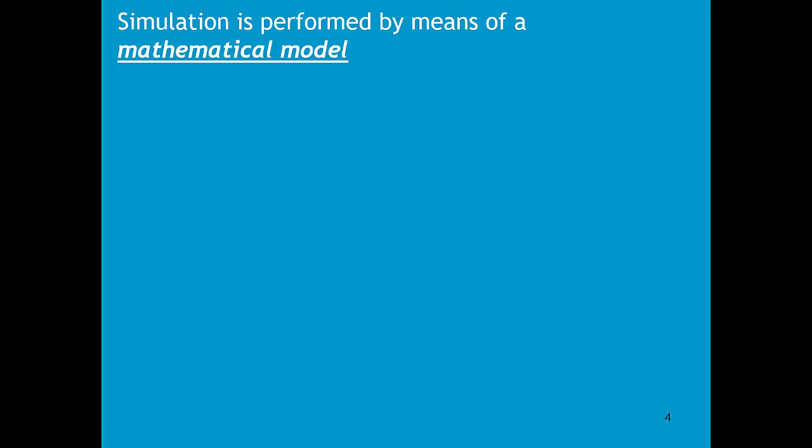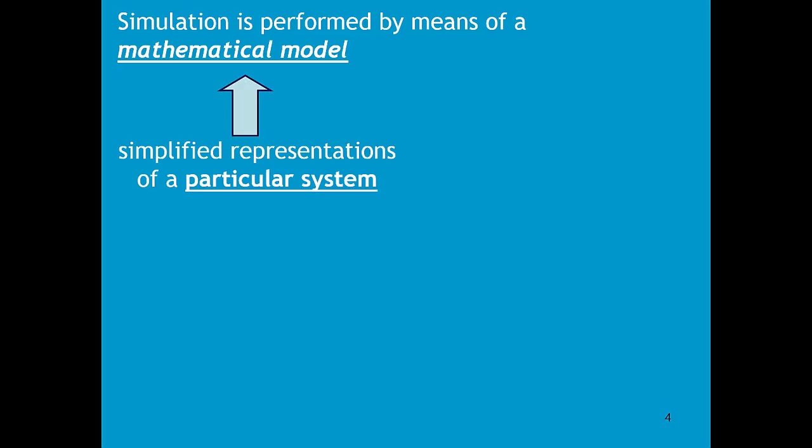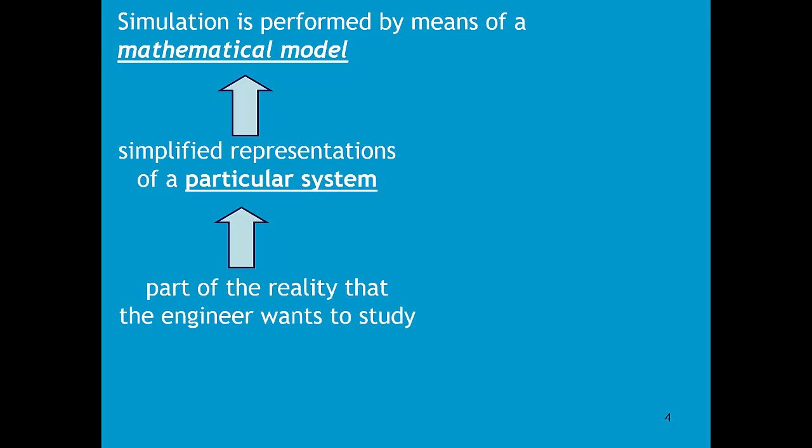Simulation is performed by means of mathematical models. Mathematical models are just simplified representations of a particular system — we are only interested in part of the reality. Only part of the reality is what we are going to model.